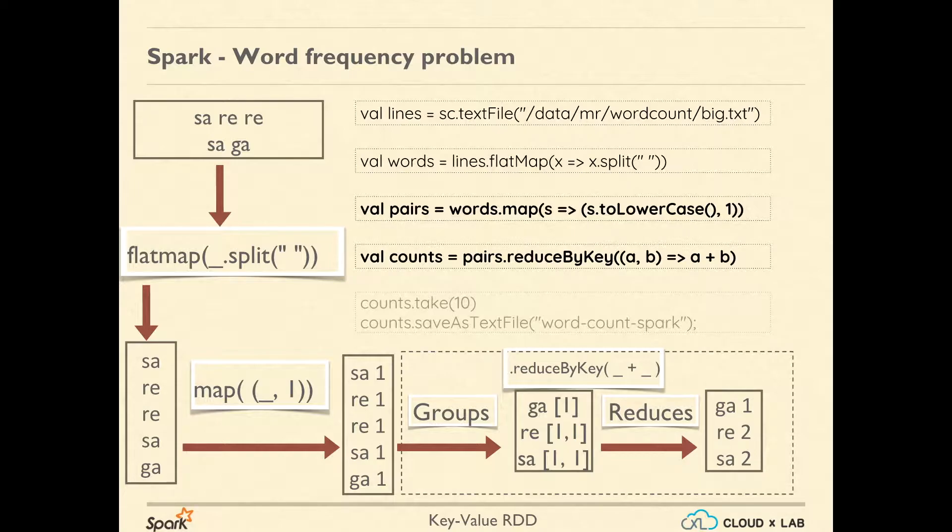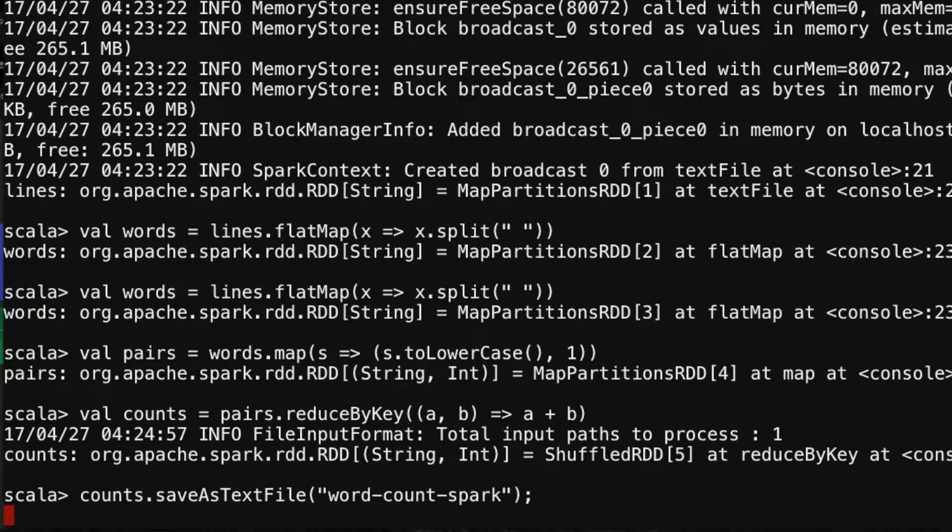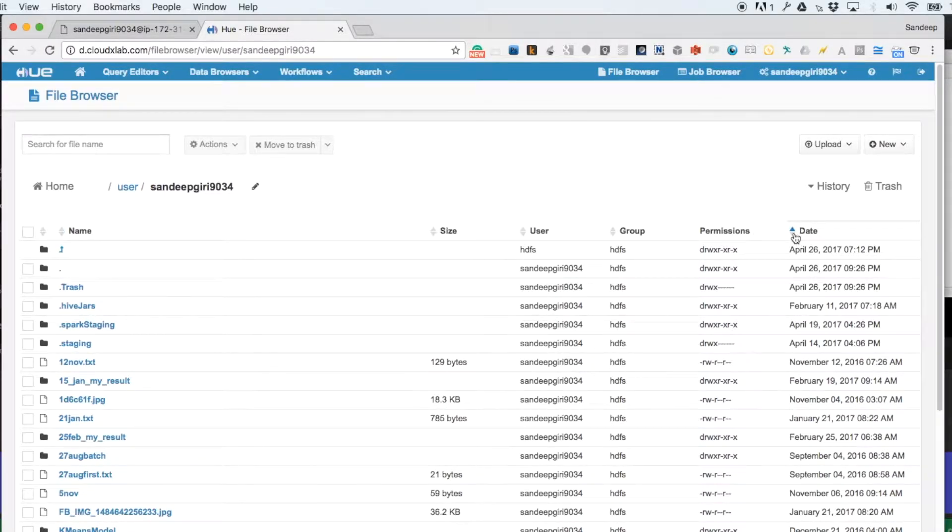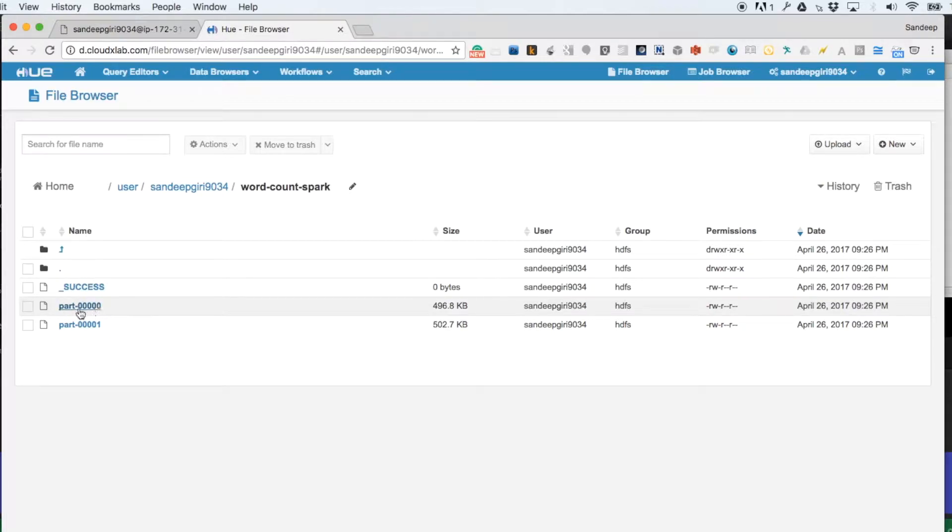Please note that we need to call an action for the process to complete. If you just want to see the first 10 records, you can use counts.take(10), or if you want to save the results into HDFS, you can use counts.saveAsTextFile("word-count-spark"). Let's execute these steps on Spark Shell inside CloudXLab web console and wait for it to finish. Now you can see that the folder is created with the name passed to saveAsTextFile and the results are saved inside this folder.